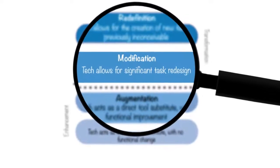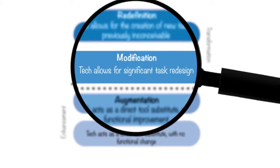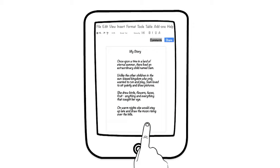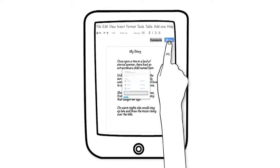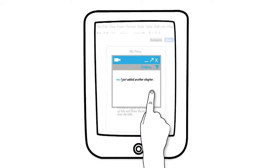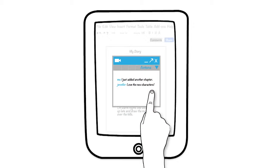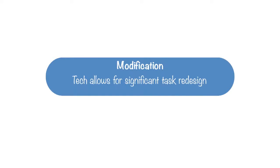In modification, technology should allow for significant task redesign. Take the same creative writing assignment and have students use Google Docs to write their stories. Students can then share these stories with peers and provide real-time feedback. Here, technology has significantly modified the original task by introducing the benefits of student collaboration.